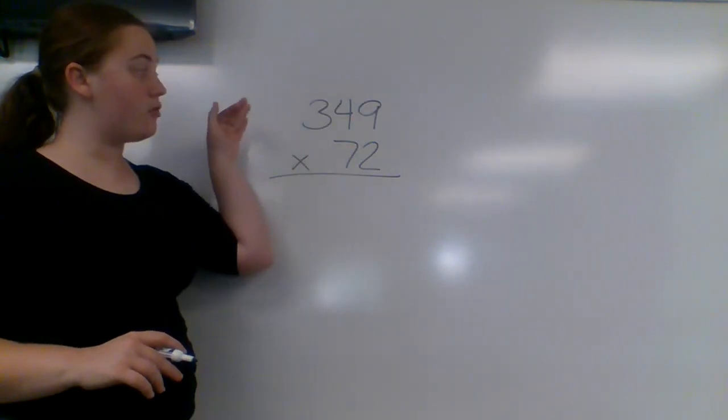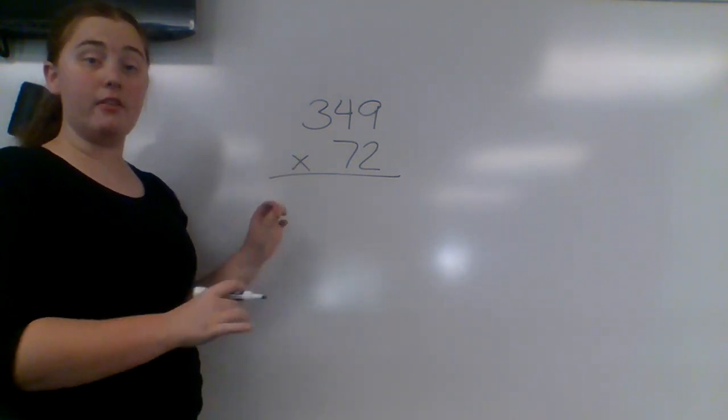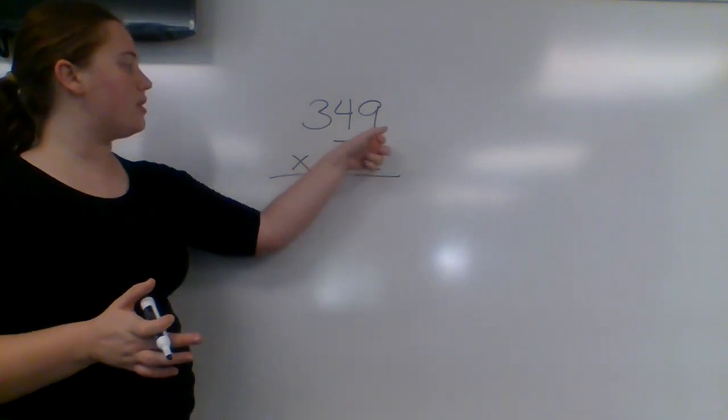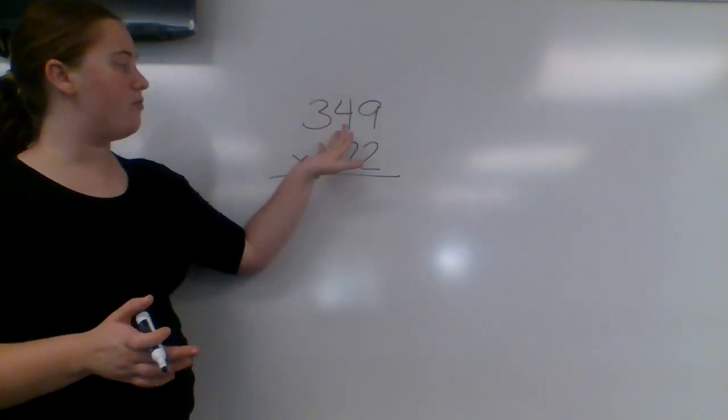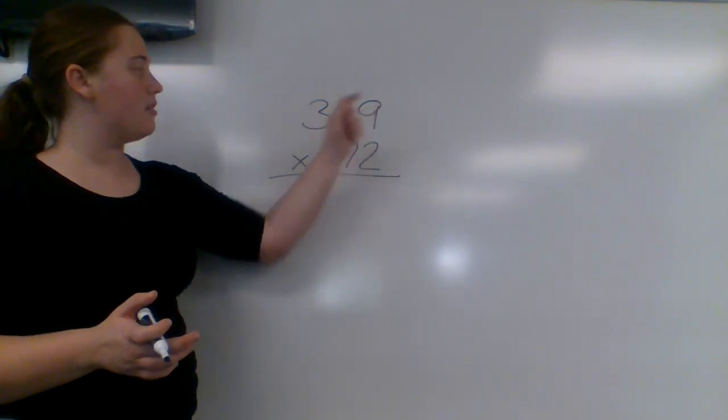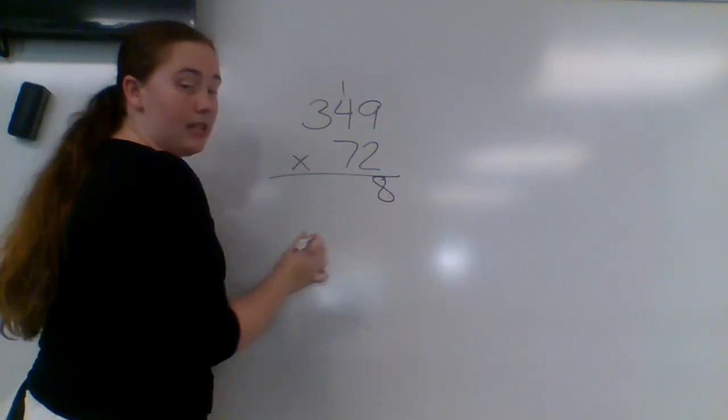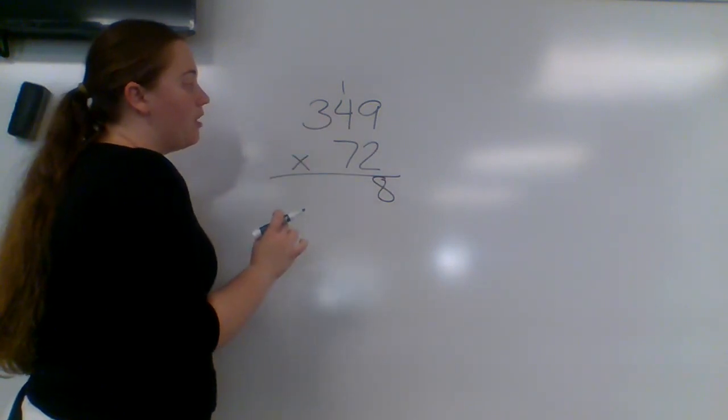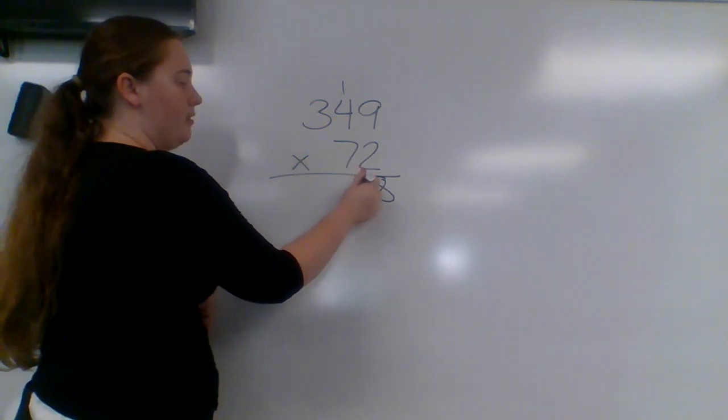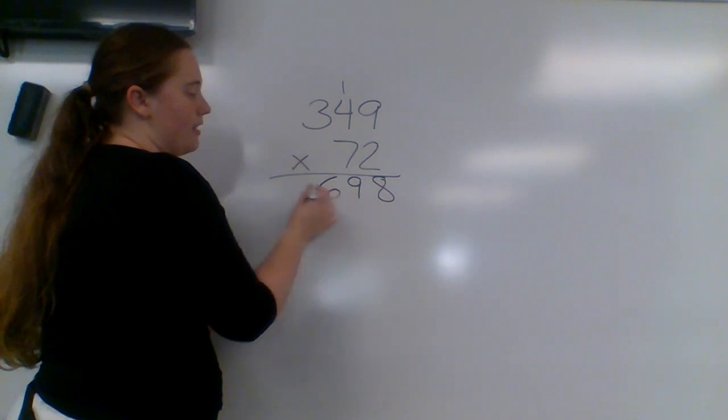My next problem is 349 times 72. I want to see if you can pause the video right now and do this problem to see if you're doing it correctly with me. So we're going to start with 2 times 9. Remember, ignore the 7. Pretend like the 7 is not there. 2 times 9 is 18. Carry the 1. 8 goes down there. 2 times 4 is 8, plus the 1 is 9. And 2 times 3 is 6.